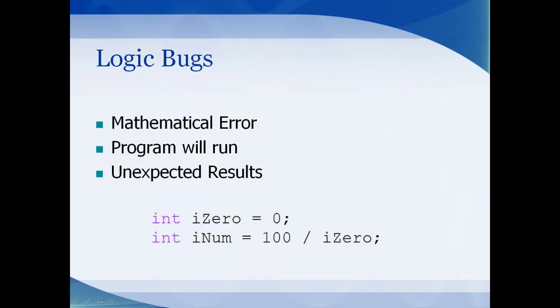Your program will run if it has a logic bug, but you might have some unexpected results. A logic bug is just an error in the logic of your code. It can be as simple as adding where you intended to subtract. In this case, the code is dividing by zero: num equals 100 divided by zero. This would actually crash the program.